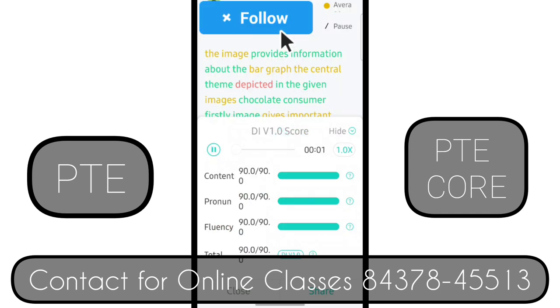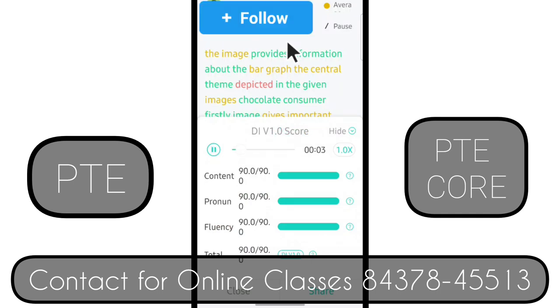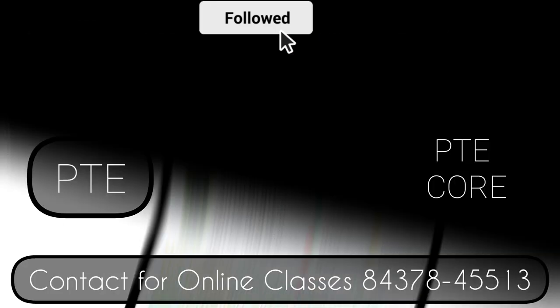The image provides information about the bar graph. The central theme depicted in the given image is the chocolate consumer.